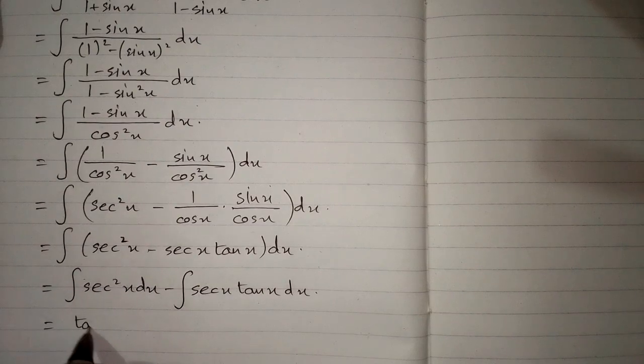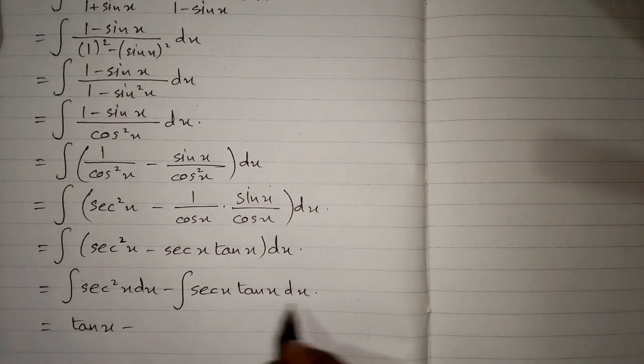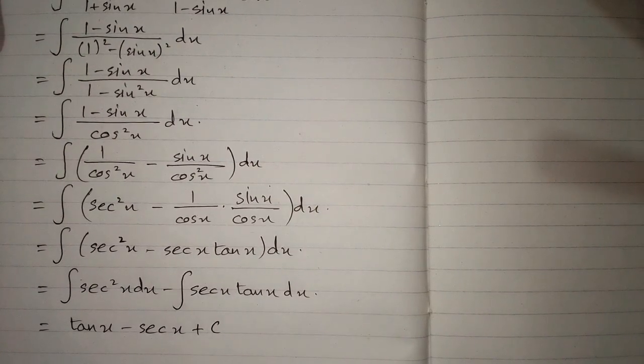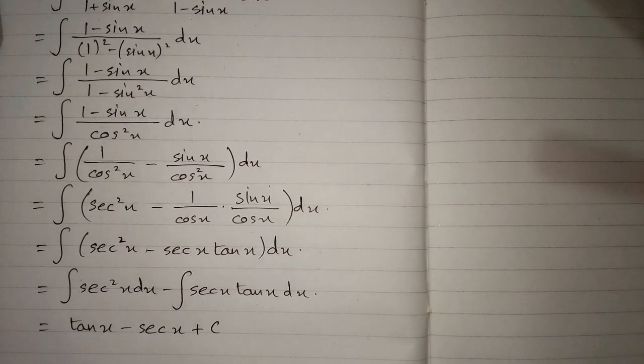Integral of sec square x is tan x. And integral of sec x tan x is sec x plus c. Here c is the constant of integration.